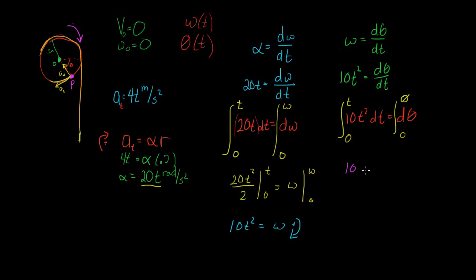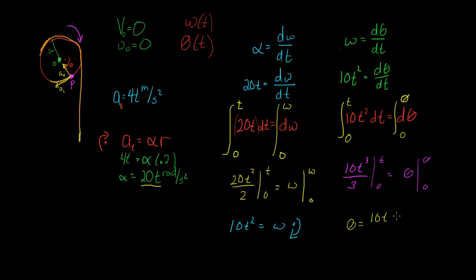Performing this integral gives 10t³ over 3, evaluated from 0 to t, equal to theta evaluated from 0 to theta. Plugging in our bounds, theta equals 10t³ over 3. This is our angular position as a function of time, and omega equals 10t² is our angular velocity as a function of time, both in the positive direction.